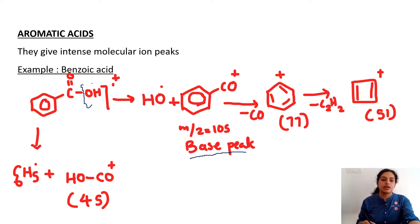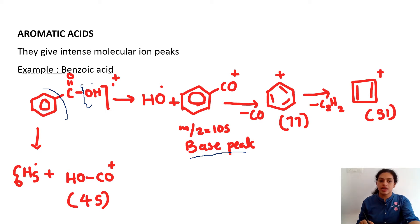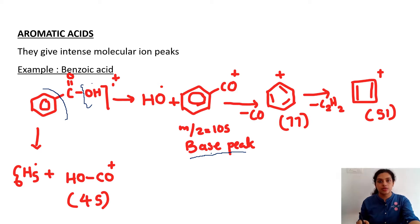If the benzene ring is expelled as a radical, C6H5 dot, the fragmentation gives a cation OHCO+ at m/z = 45. This is the important fragmentation because the base peak is obtained here, and this pattern is familiar from earlier discussions of carbonyl compounds.